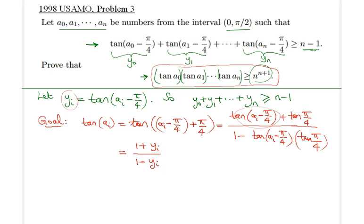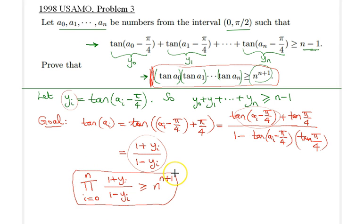Therefore, the goal statement would simply be the product of these fractions. The goal would be the product from i equals 0 to n of 1 plus y sub i over 1 minus y sub i, greater than or equal to n raised to the power n plus 1. That's what we want to achieve.